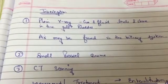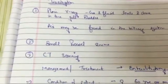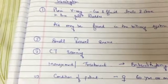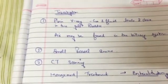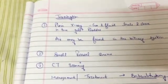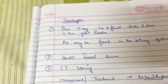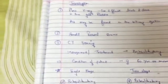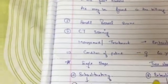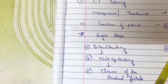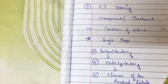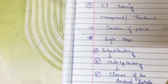CT scan also helps identify any gallstones or an air-filled fistula. The management and treatment is by enterolithotomy — 'lithotomy' in surgery means removal of a stone, and 'entero' means intestine, so it is removal of the stone from the intestine. There are two types of stages: single-stage and two-stage. Single-stage is done when the condition of the patient is good — first perform enterolithotomy, then cholecystectomy, then closure of the cholecystoduodenal fistula.